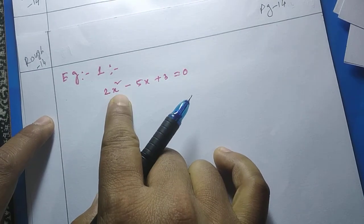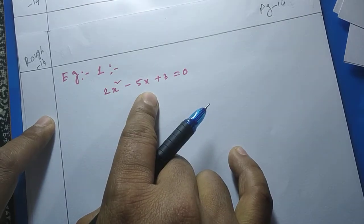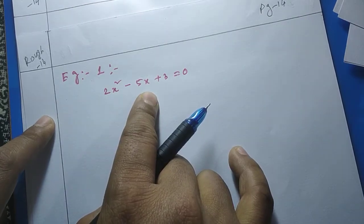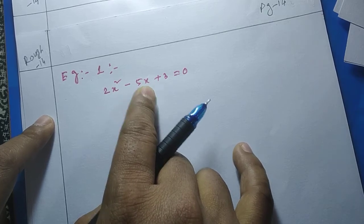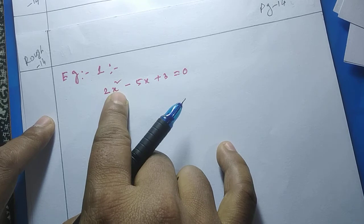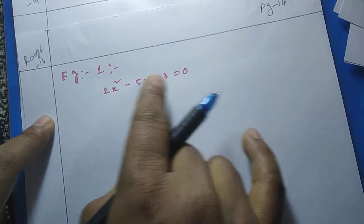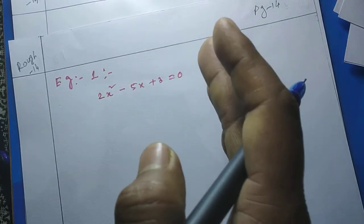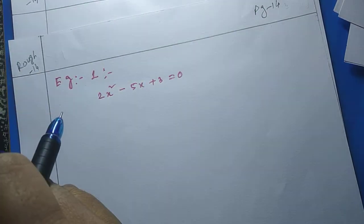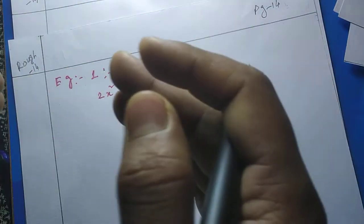Here is the first example. We have to find the roots of the quadratic equation 2x² − 5x + 3 = 0 by using the factorization method, meaning we have to split the middle term and bring it into two linear factors. From there we can find the values of x very easily.